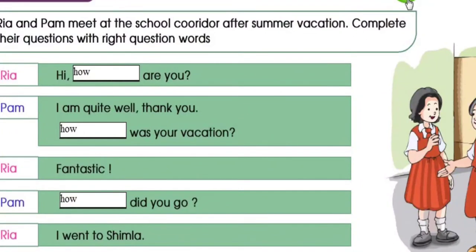Hi, how are you? I am quite well, thank you. How was your vacation? Fantastic. Now the next question — the computer has shown the wrong answer. It should not be 'how,' it should be 'where.' Where did you go? W-H-E-R-E. Where did you go? Ria is saying that I went to Shimla.